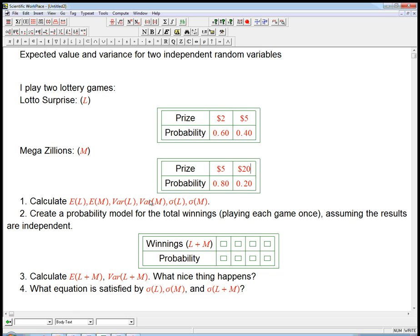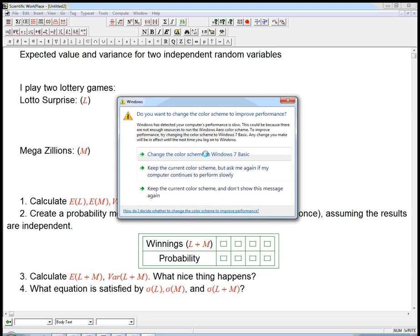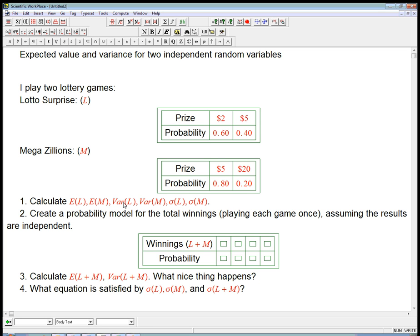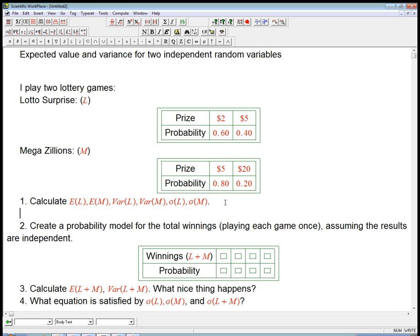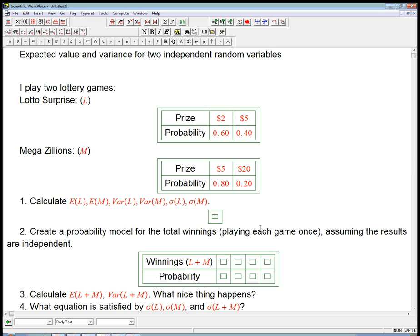So first, let's calculate all the interesting quantities that we now know how to calculate. The expected value, otherwise known as the mean, the variance, and the standard deviation of all these random variables. Then we're going to see what happens when we look at the total winnings. Let's go ahead and analyze them independently first, separately.